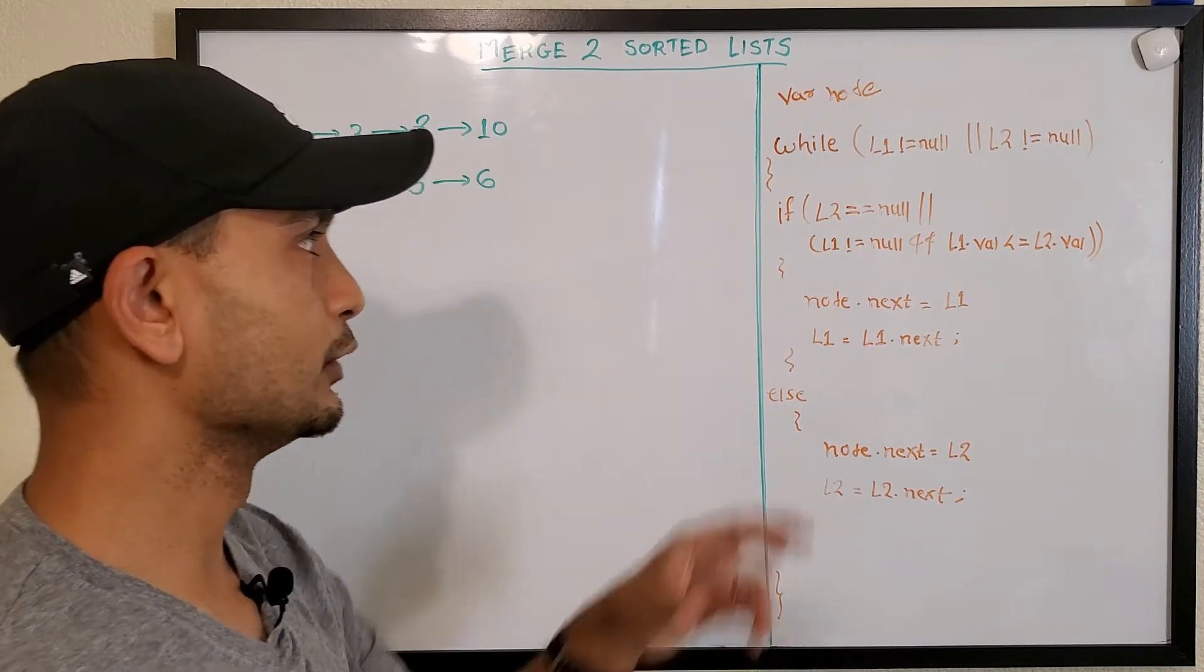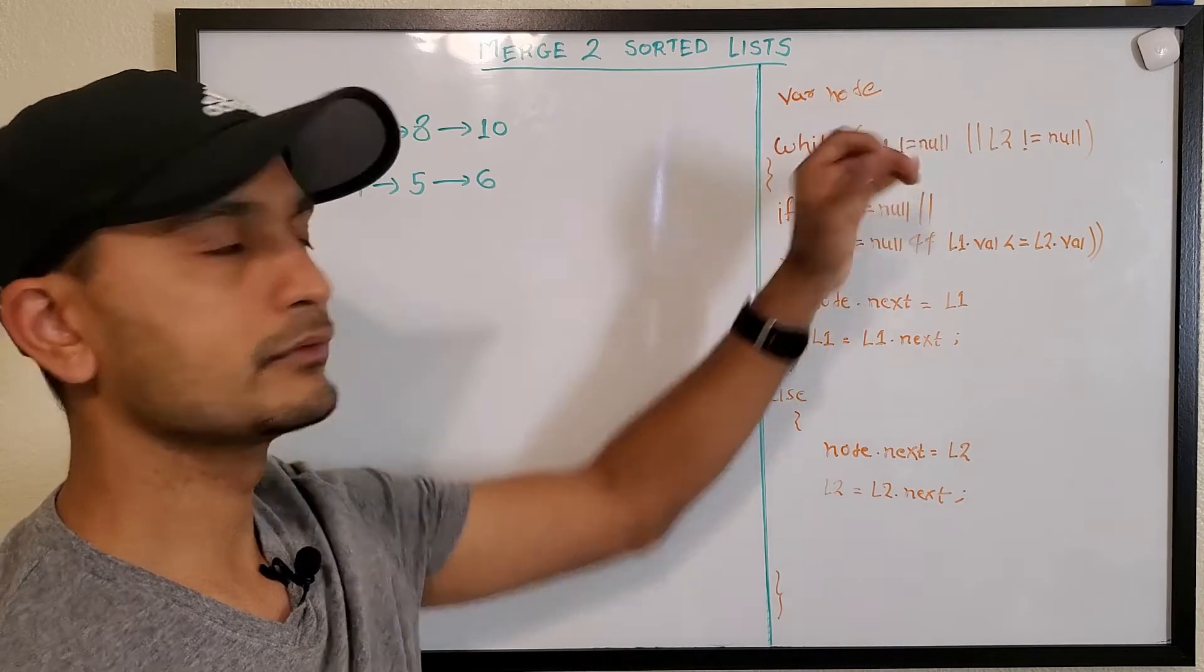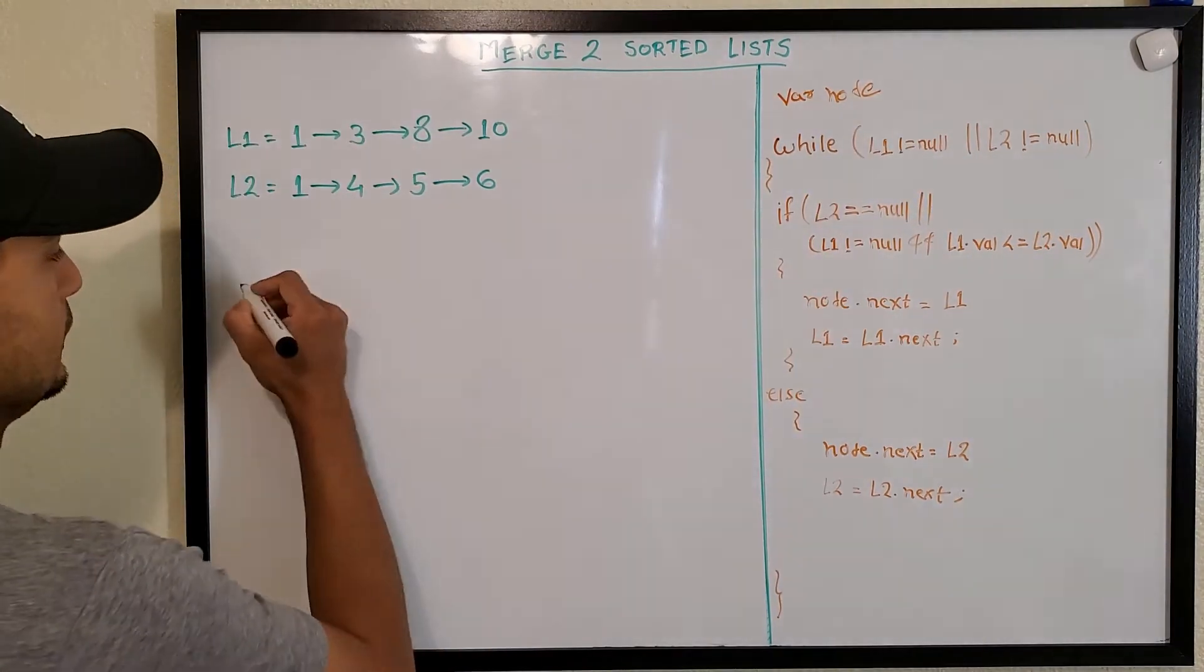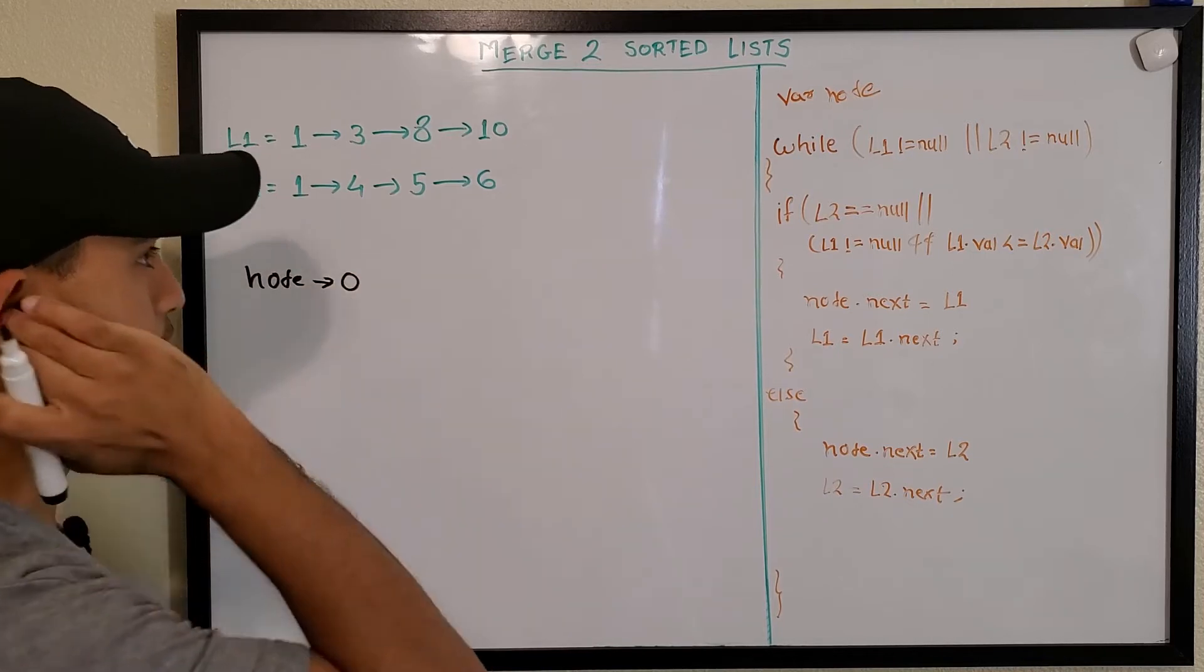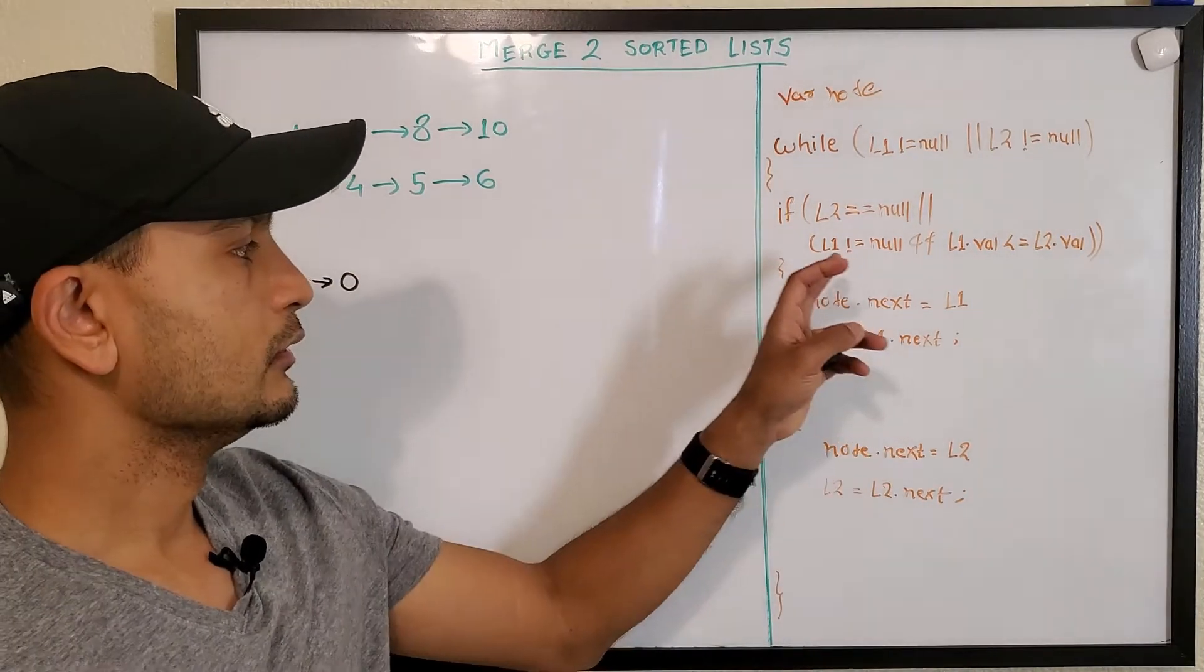What we're doing is we're taking a dummy node. Let's say this is our node, and it's a dummy node, so it points to zero for now.